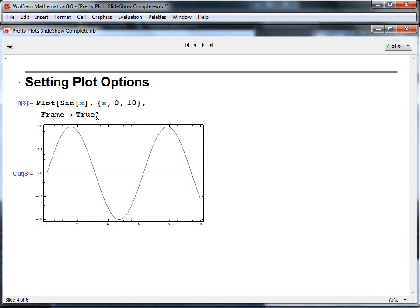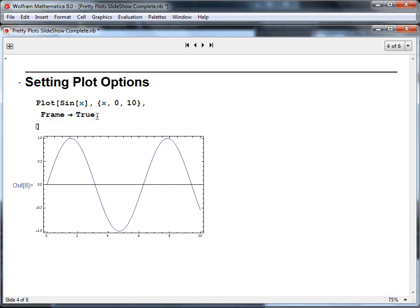And the next option I'd like to add is to remove the axes running through the middle of the plot, because we don't need axes and a frame. So we'll say axes, false. And it removed the x-axis that was running through the middle.